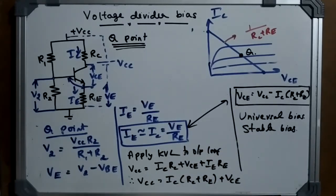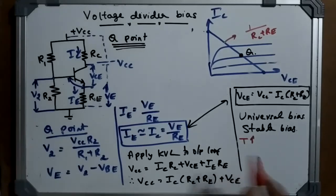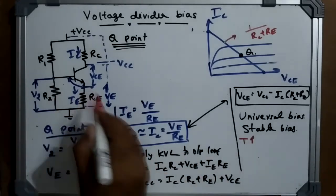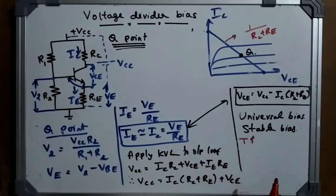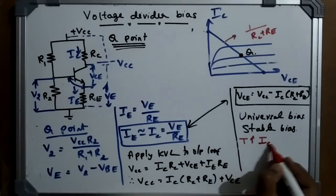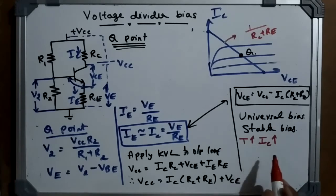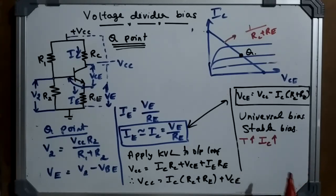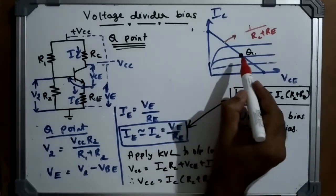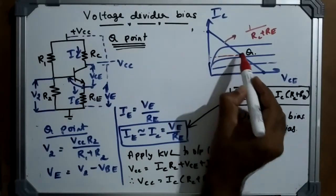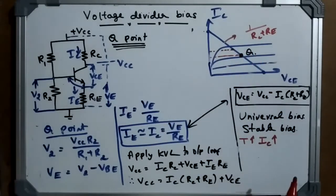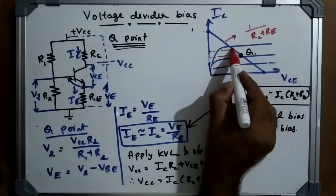What causes the Q point to change? As temperature increases — either from the surroundings or from prolonged transistor operation — the collector current increases. This is because temperature increases the minority charge carrier current, and since IC includes both majority and minority carriers, IC rises. When IC increases, VCE decreases, and the Q point shifts.